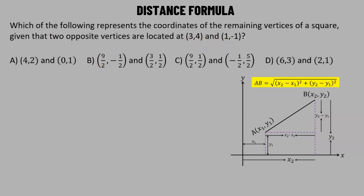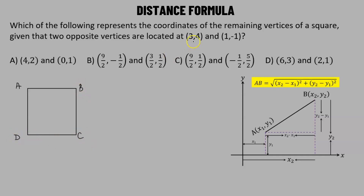Let's try to understand this with the help of a diagram. Suppose we have a square with vertices A, B, C, and D. We are provided with the coordinates of two opposite vertices. Let's say A has the coordinate (3, 4), then the vertex opposite to A is C, having coordinate (1, -1). Using this, we need to find the coordinates of B and D.